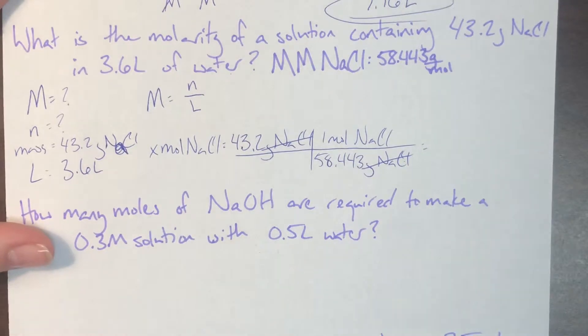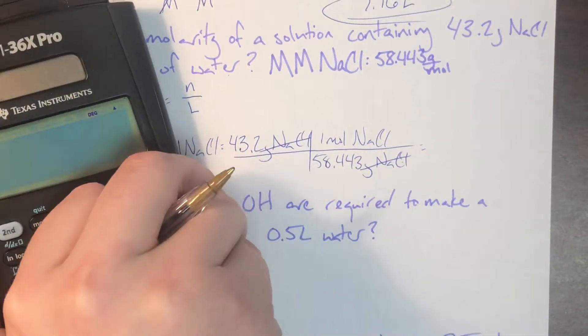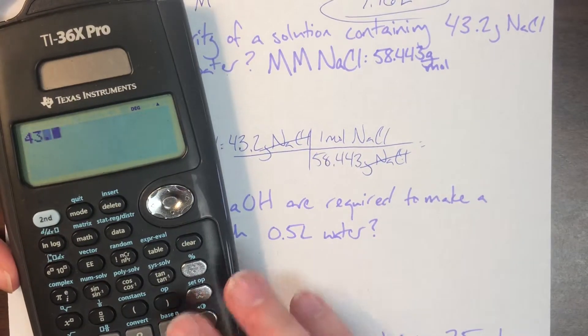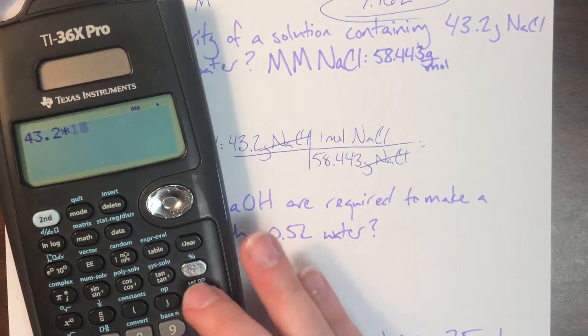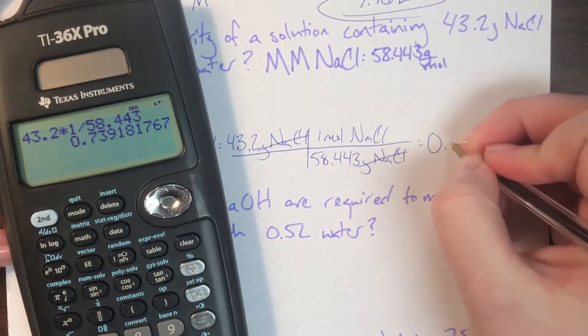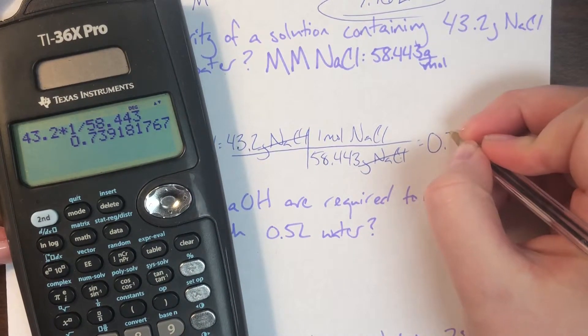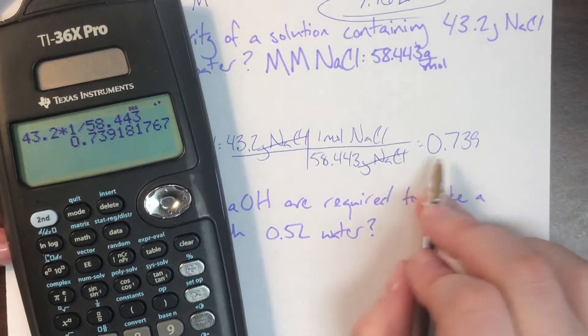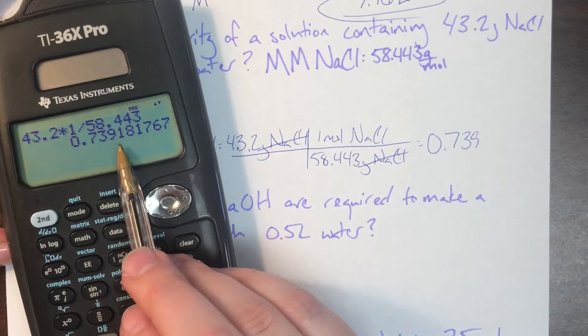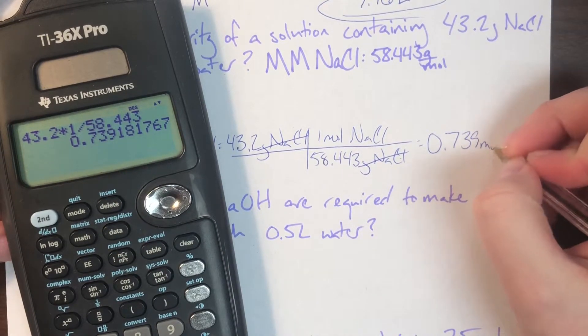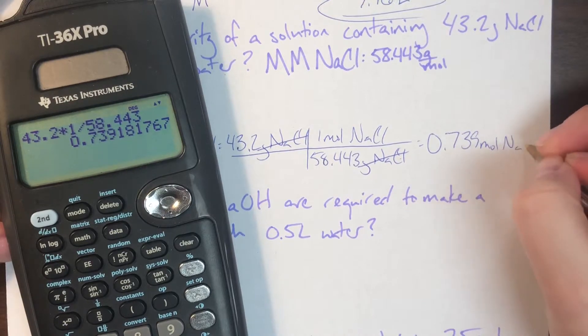I will multiply everything on the top, and I'll divide by everything on the bottom, so that would be 43.2 times 1 divided by 58.443. That gives me the number 0.739. I'm going to go ahead and just keep three decimals here. This 1 doesn't make me round up, so that 9 is safe. And I will say that that is my moles of sodium chloride.